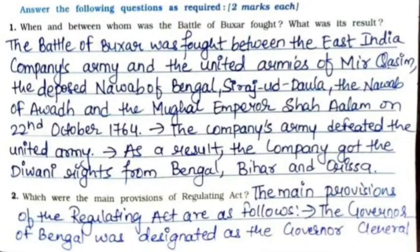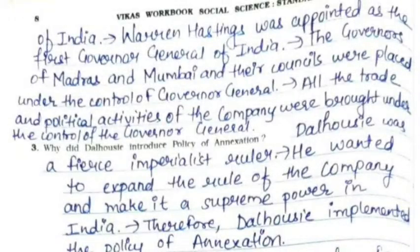Second: What were the main provisions of the Regulating Act? The main provisions are as follows: The Governor of Bengal was designated as the Governor General of India. Warren Hastings was appointed as the first Governor General of India. The Governors of Madras and Mumbai and their councils were placed under the control of the Governor General. All the trade and political activities of the company were brought under the control of the Governor General.